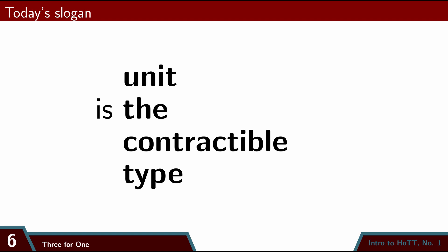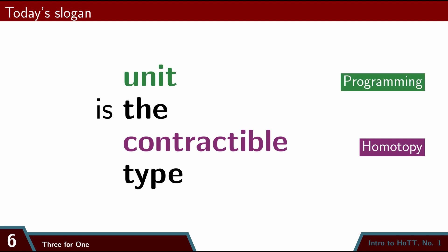The type I'll be using is called one, or unit. Here's a helpful phrase to keep in mind. Unit is the contractible type. Contractible is a notion from homotopy theory. The idea of a unit type comes from functional programming.